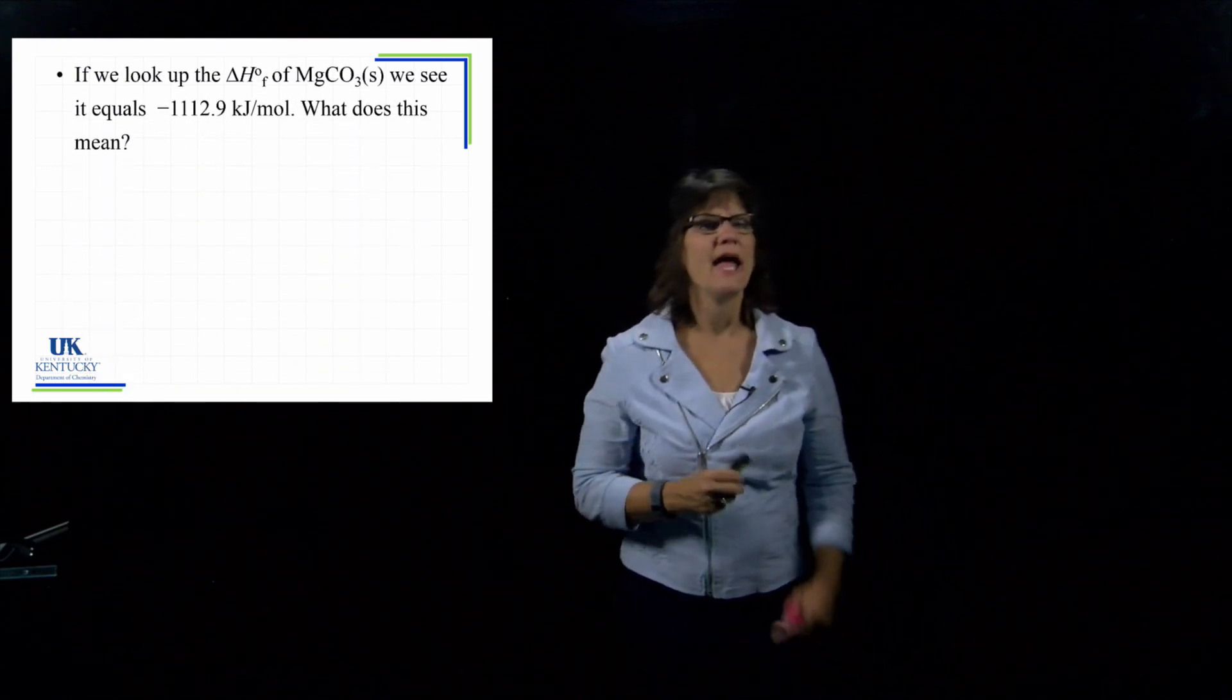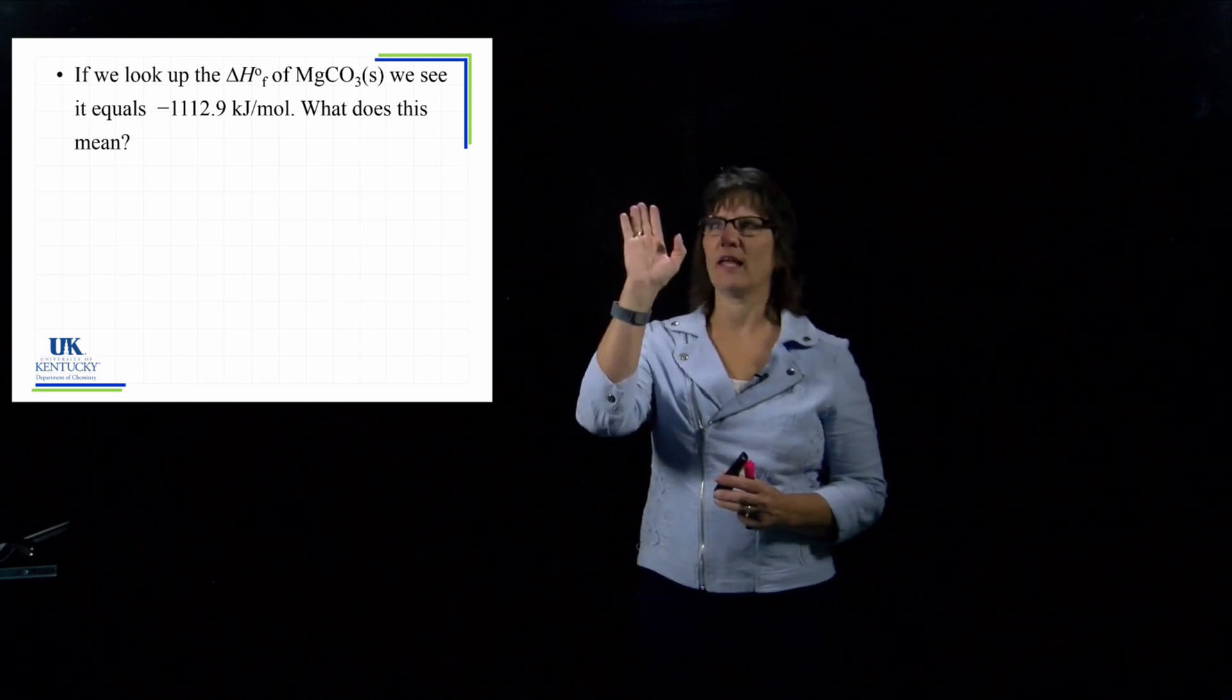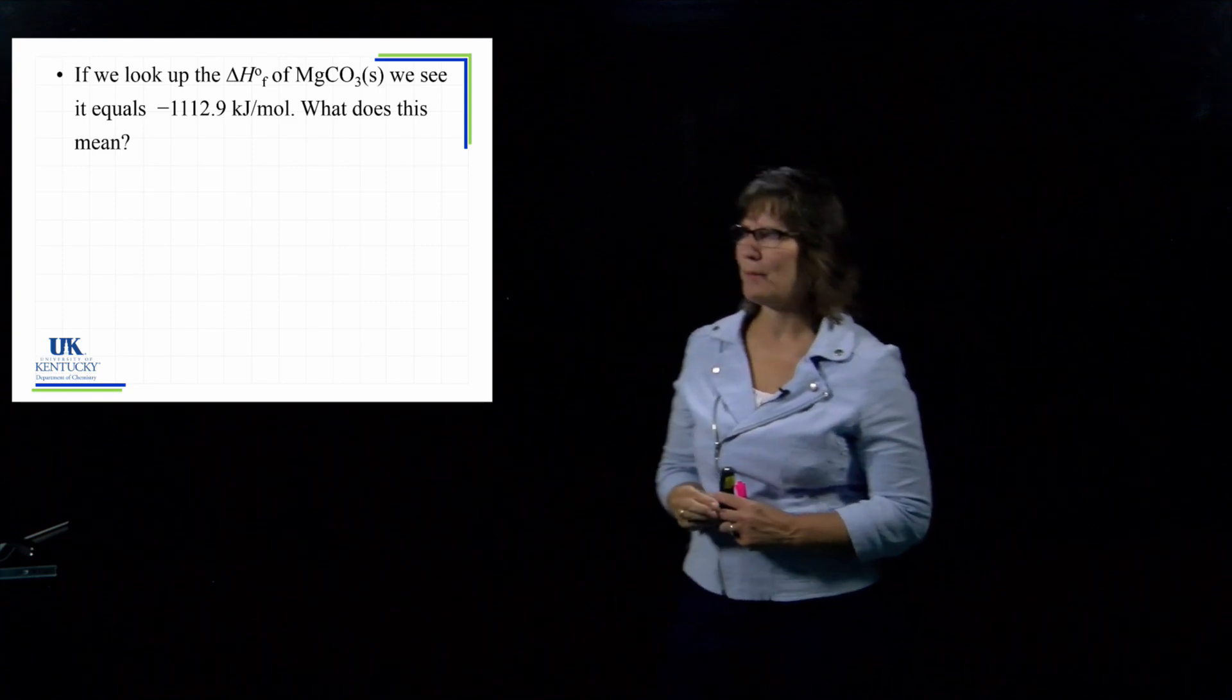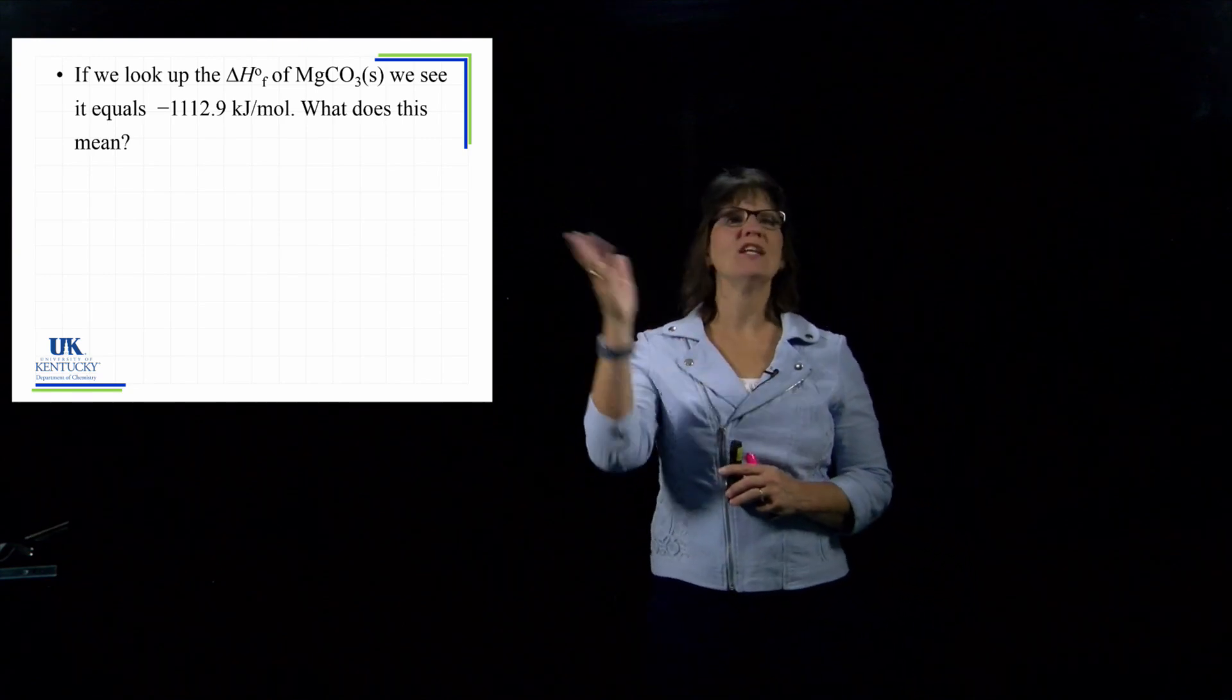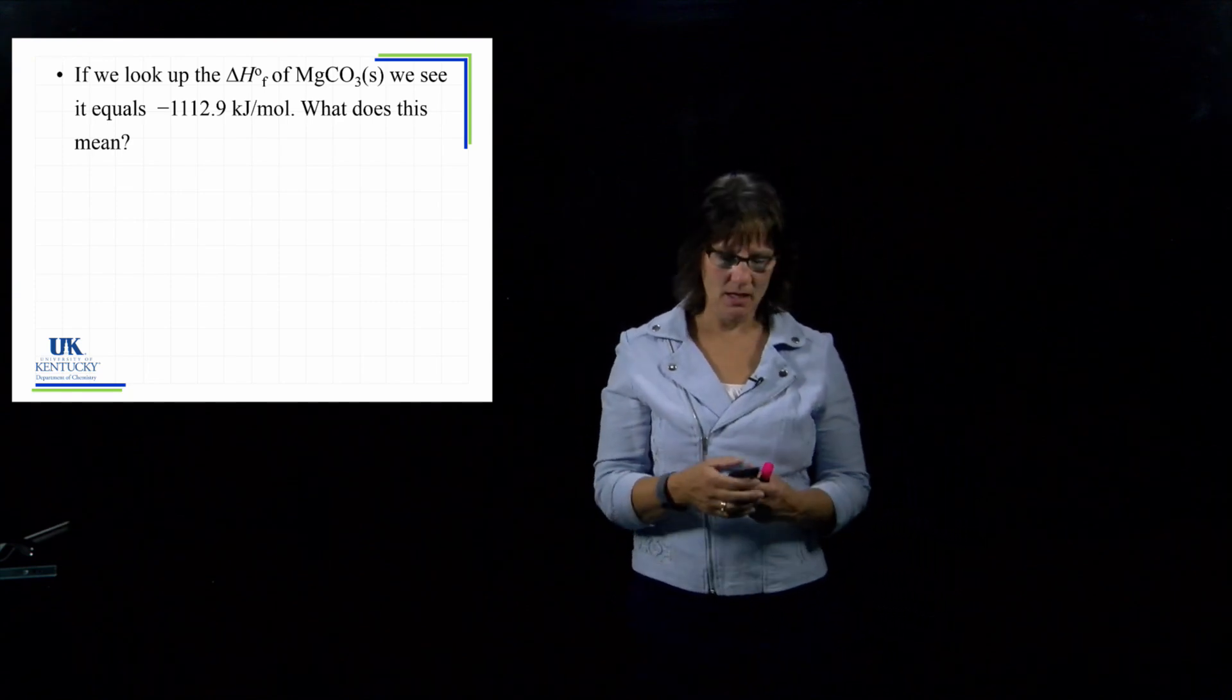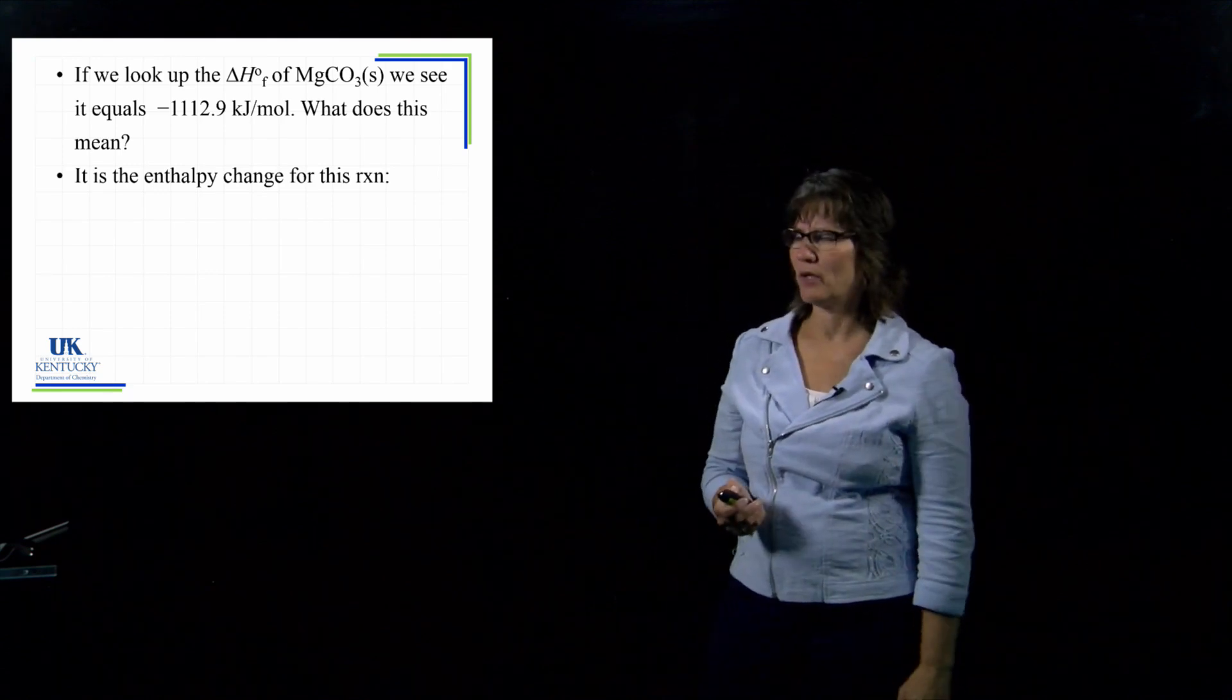We're not ready to use it yet. What we're ready to do is really think about that reaction that it's describing. When I look up the delta H of formation of magnesium carbonate, that's all it'll say, it'll say magnesium carbonate, and then it'll have a value for the delta H of formation, and let's say when we look it up, it's a negative 1112.9 kilojoules per mole. What we need to understand is what this means. I don't want you just using numbers to solve these problems, I want you to understand the underlying meaning of enthalpy of formation. So what we're going to do is, we are going to form one mole of the magnesium carbonate.